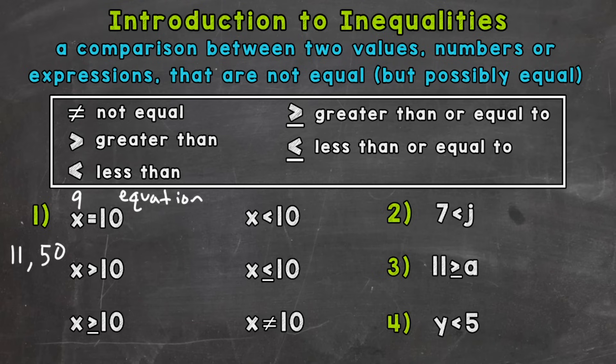The third inequality is x is greater than or equal to 10. So all of those solutions we talked about for x is greater than 10 — 11, 50, 150, anything greater than 10 — would be a correct solution, just like the one above. But with this one, 10 is a correct solution as well.